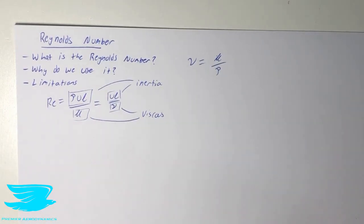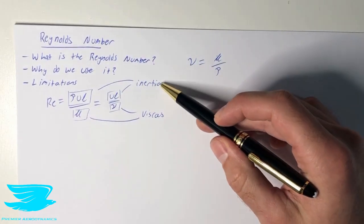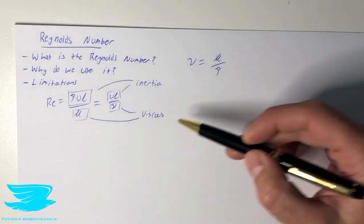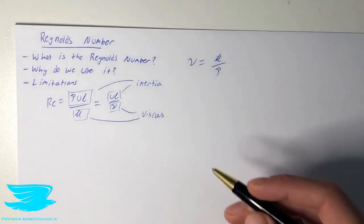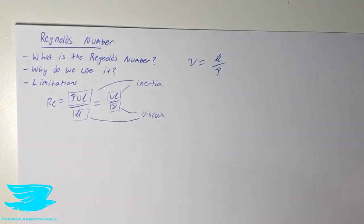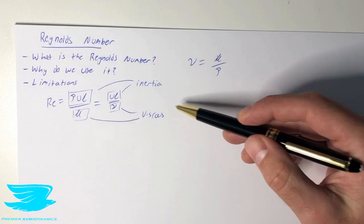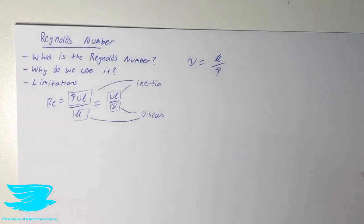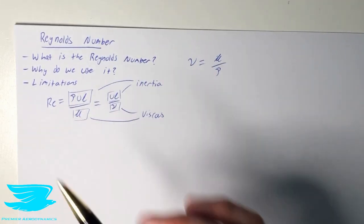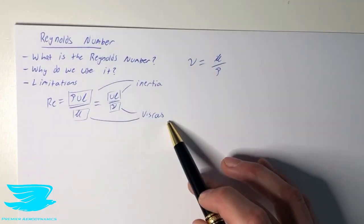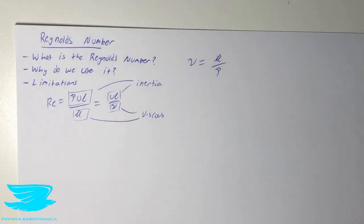If we have the Reynolds number well above one, we can see that the inertial forces are now going to be much greater than the viscous forces, which means that inertia is going to dominate the flow. If the Reynolds number is significantly below one, we can then conclude that the viscous forces are dominating the flow.